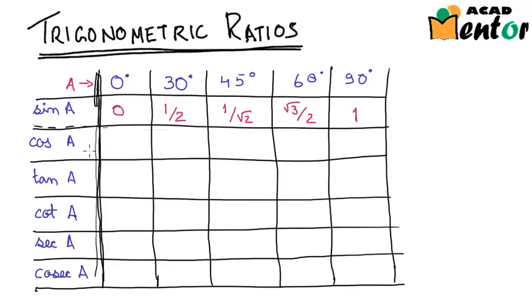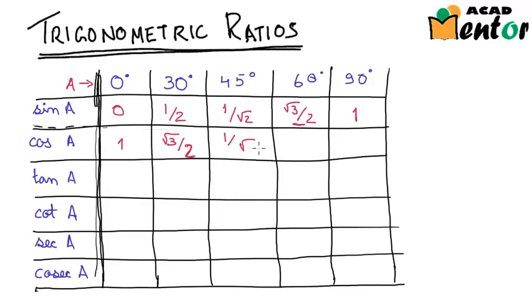Now let's fill out the values of cos A when A takes all these values. If you remember, I said that the value of cos 0 is equal to the value of sin 90, and hence cos 0 would be 1. Then cos 30 degrees would be the same as sin 60 degrees, that is √3/2. Cos 45 degrees was 1/√2, cos 60 degrees was equal to sin 30 degrees, that was 1/2, and finally cos 90 degrees was 0.